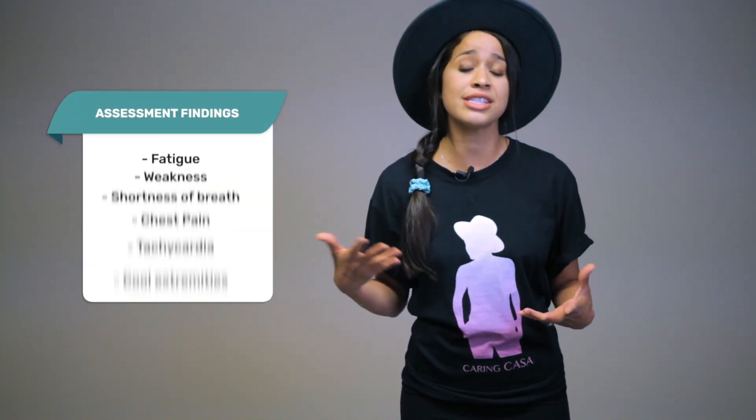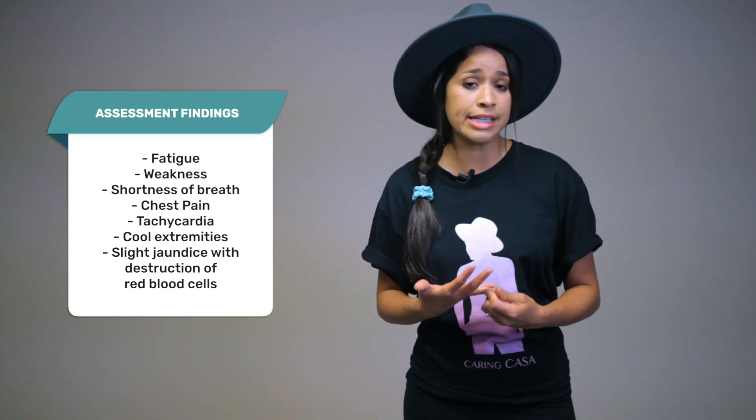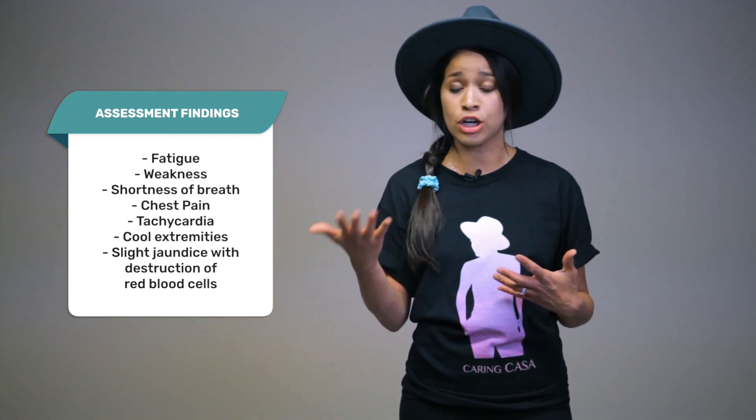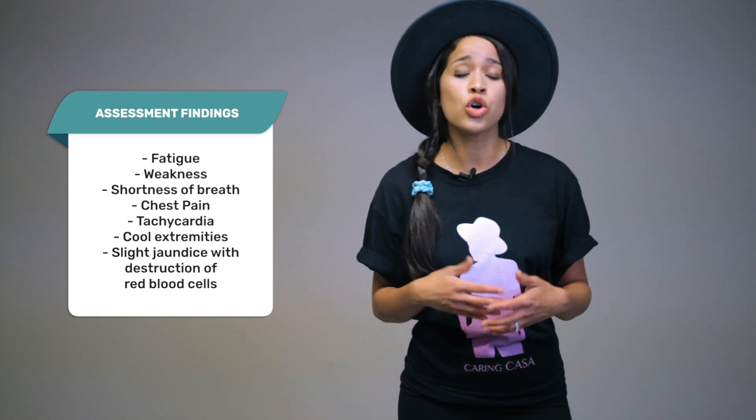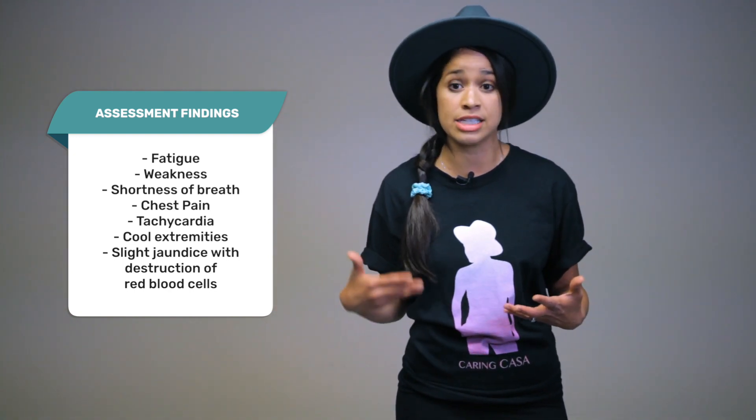How do you know when a patient has anemia? One definitive way is through lab results. However, if morning labs were normal and mid-afternoon the patient is feeling fatigued with a tachycardic heart rate, you need to act. Other symptoms of anemia include fatigue, weakness, shortness of breath, chest pain, tachycardia, cool extremities, and possibly light jaundice due to destruction of red blood cells.